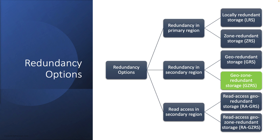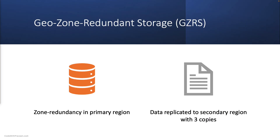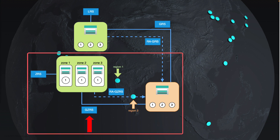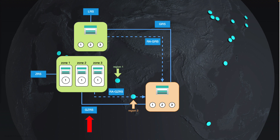GZRS, on the other hand, combines it with zone redundancy in the primary region. It combines redundancy across availability zones with protection from regional disasters by replicating your data across availability zones and to a secondary geographic area. It provides a minimum of 16 nines of durability and is the ideal choice for maximum consistency, durability, availability, and resilience. Additionally, it offers read access to your data in the secondary region. In this image, the Central India region has zone redundancy in three zones, and the same is replicated in the South India region, which has three copies of the data.